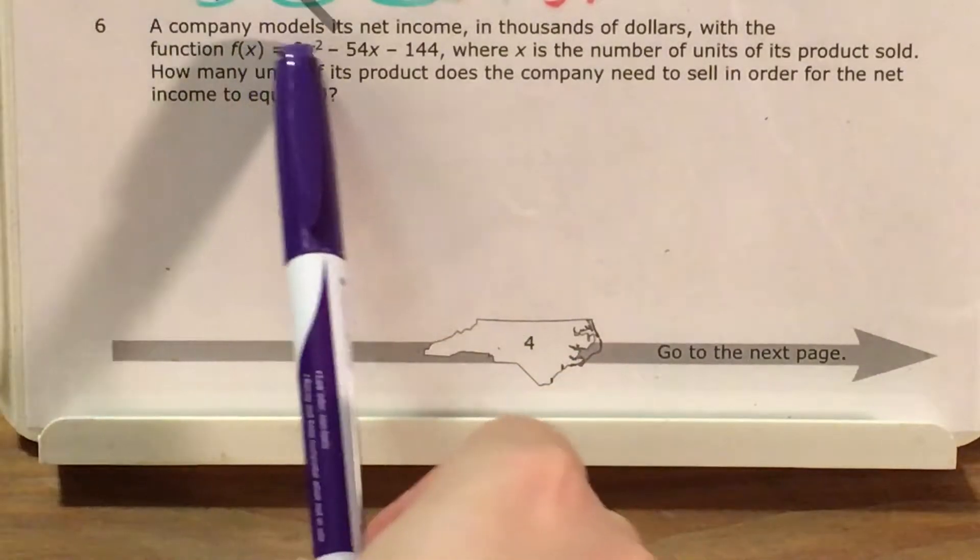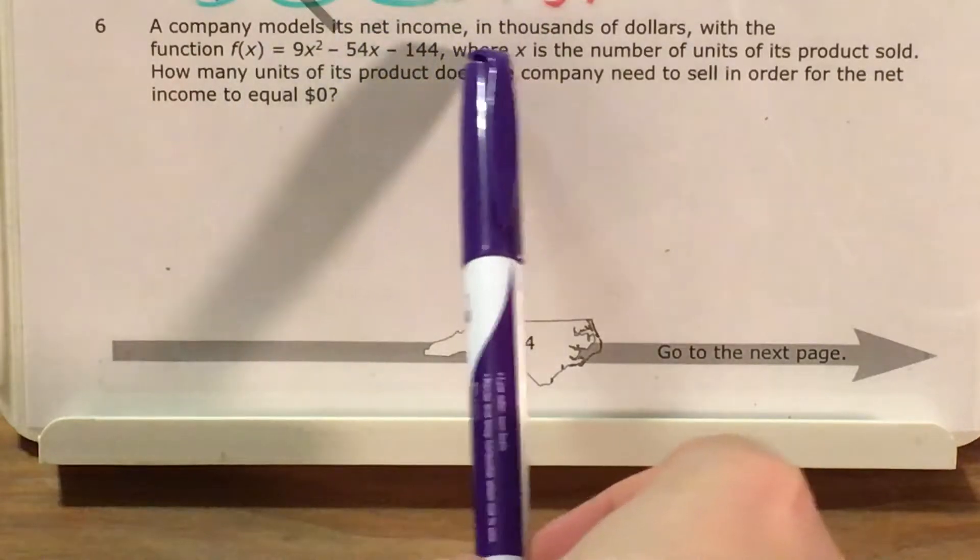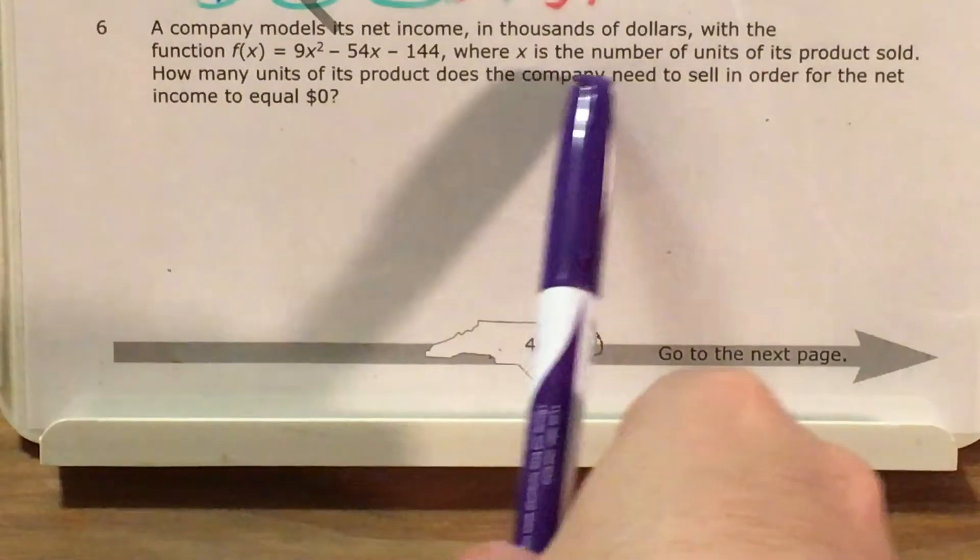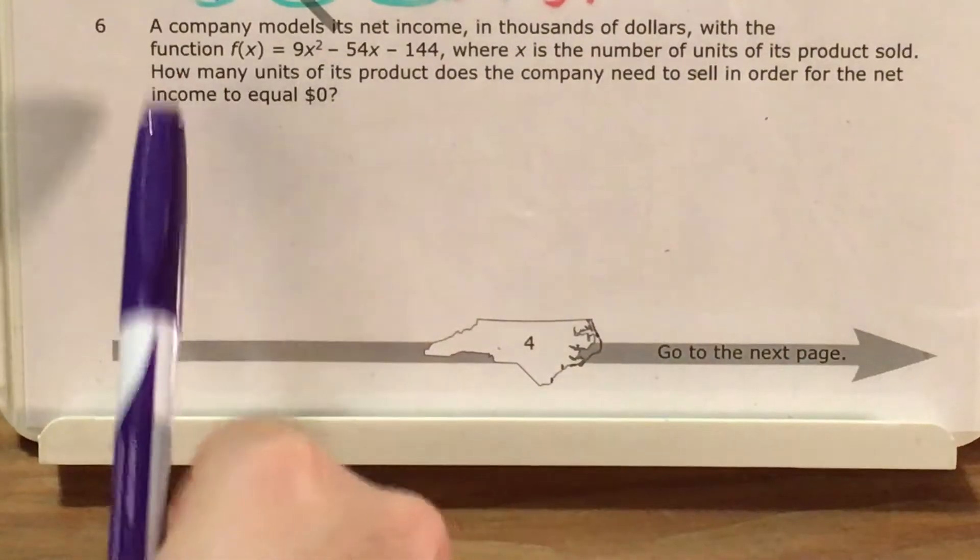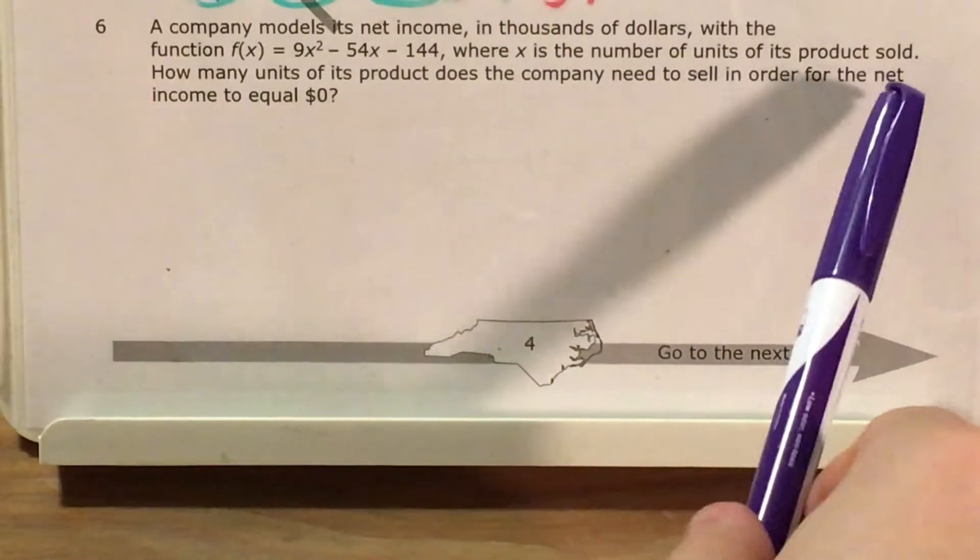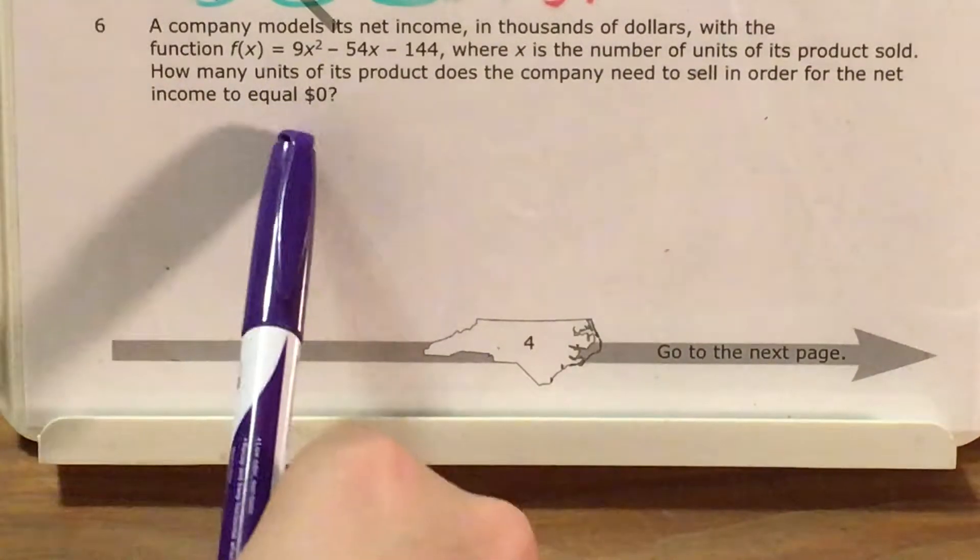The question tells us that a company models its net income in thousands of dollars with this big monstrosity of a quadratic function where x is the number of units of its product sold. And we're trying to figure out how many units of its product does the company need to sell in order for the net income to equal zero dollars.